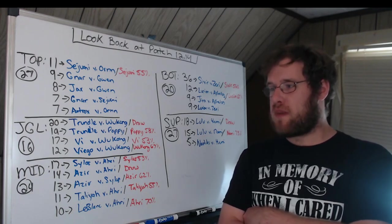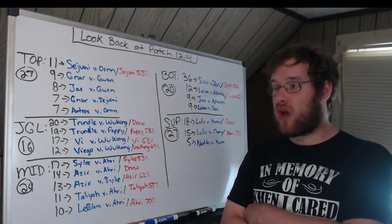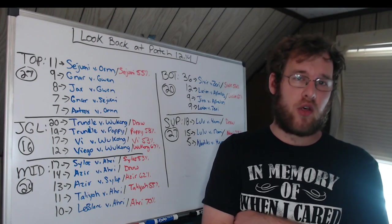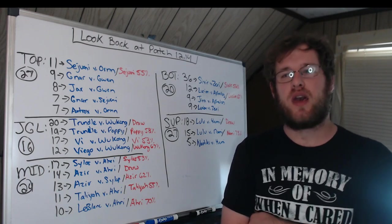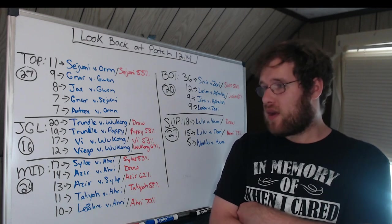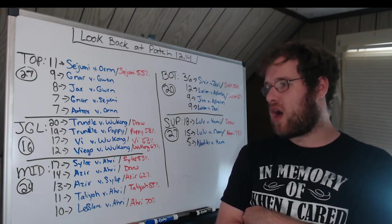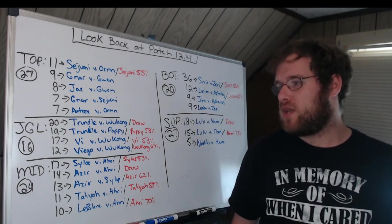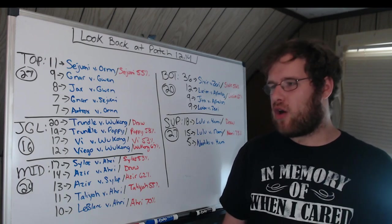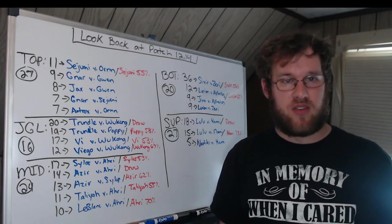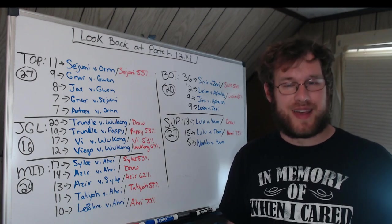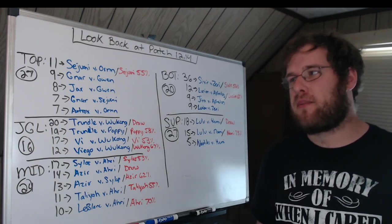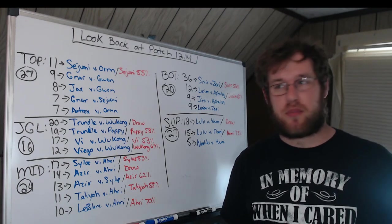If people didn't want to go Trundle into Wukong, they went Vi into Wukong, and Vi actually had a 53% win rate through 17 games. So if you pick Trundle or Vi into Wukong, you're pretty okay. From the outside people might say Wukong is clearly the number one jungle pick, but it's not really — Trundle or Vi works fine. Viego versus Wukong happened 12 times and Wukong won 8 of them, so Viego players stopped picking it. Viego has fallen out of the meta.